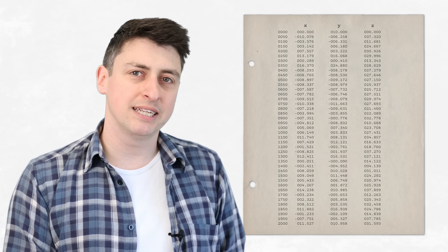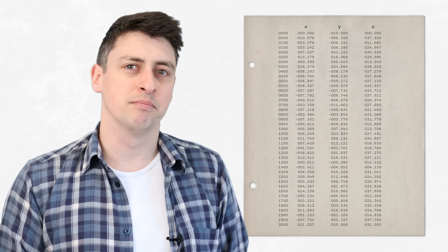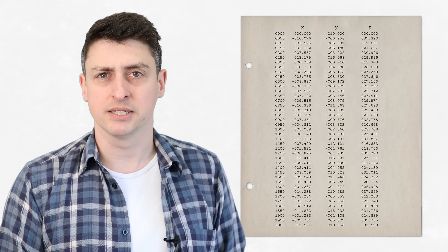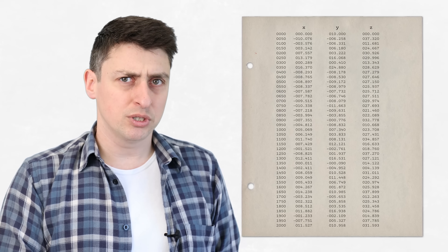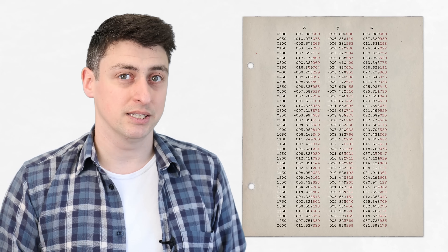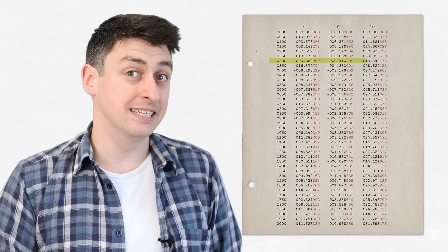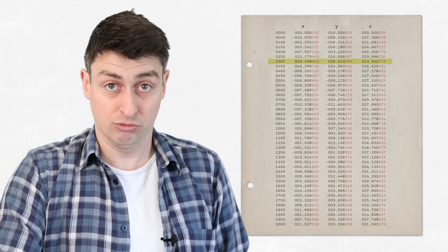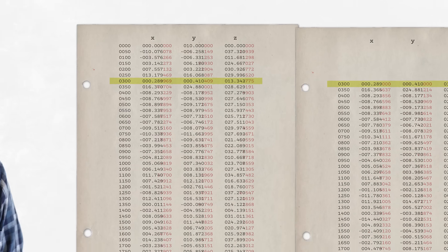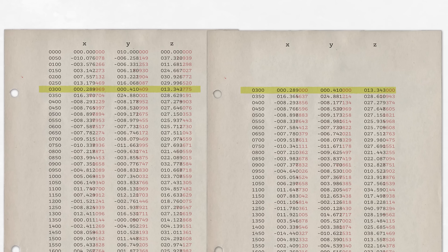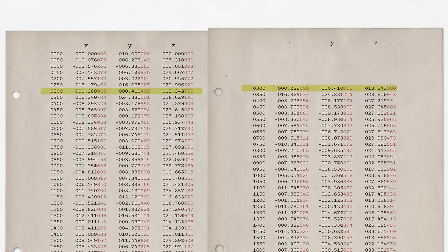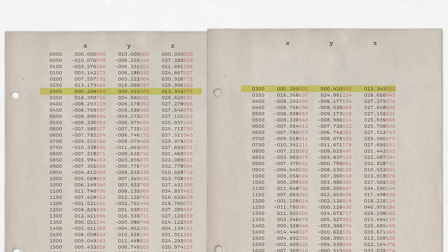Lorenz realized that the problem was with the printout. The printout was listing the numbers in the computer to three decimal places, but the computer was calculating them to six decimal places. So when he restarted the simulation using these numbers with three decimal places, he was actually restarting the system in a slightly different state.